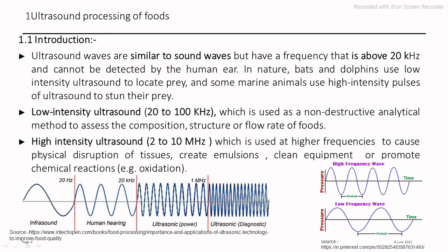The second group is the high intensity ultrasound waves in the range of 2 to 10 megahertz. The intensity is very high, making this a destructive analysis technique in which animal, plant, or microbial cells are disrupted by the shearing and tension forces of the ultrasound. This technique is used for destructive analysis, extraction of internal components, creation of emulsions, homogenization, cleaning of equipment, and promoting chemical reactions like oxidation.